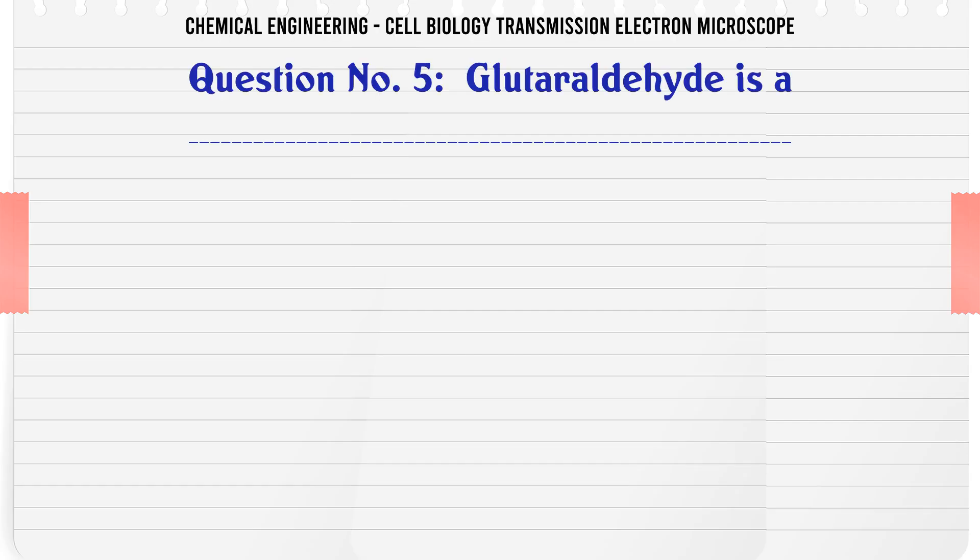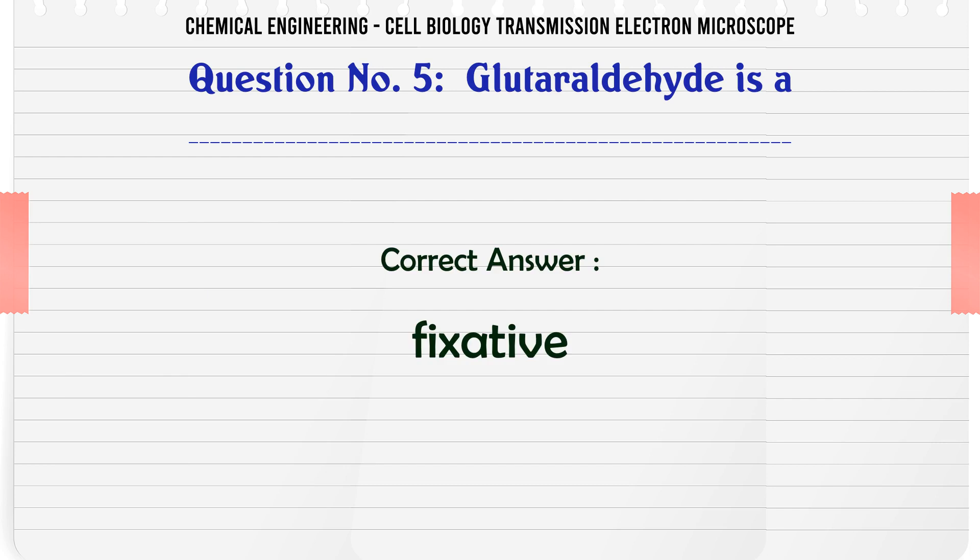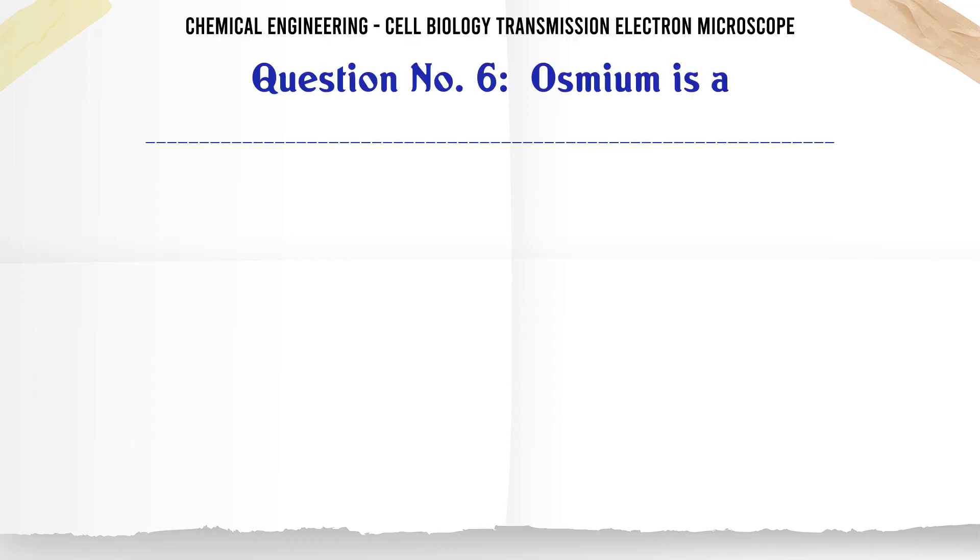Question 5: Glutaraldehyde is a: A. Metal, B. Fixative, C. Non-metal, D. Atomic species. The correct answer is fixative.